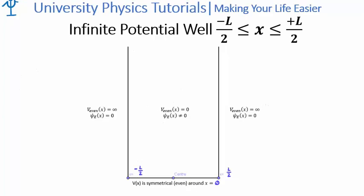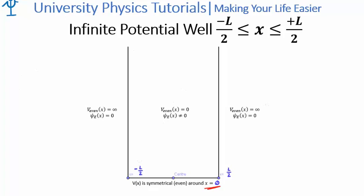Now the present video is concerned with an infinite potential well extending from x equal to negative L over 2 to positive L over 2, centred at x equal to 0. The first thing we need to do is solve the time independent Schrödinger equation.